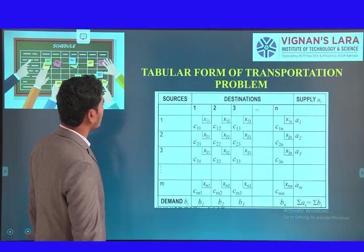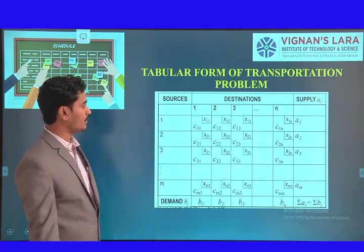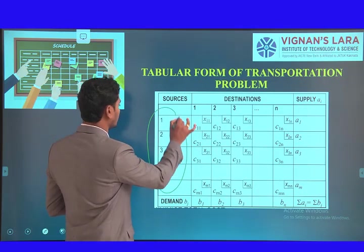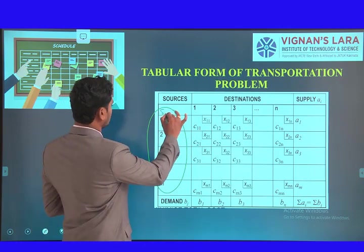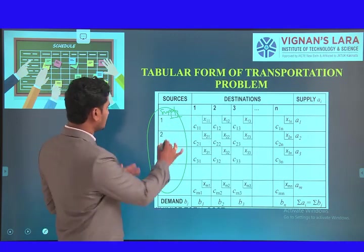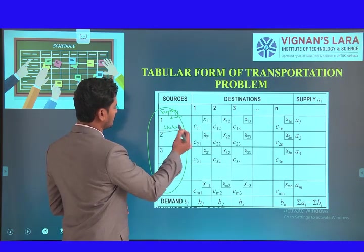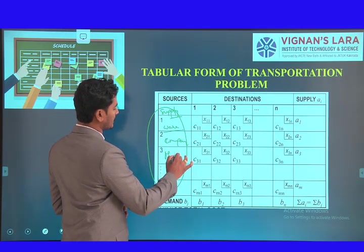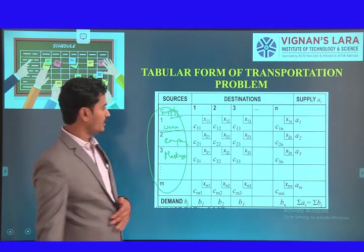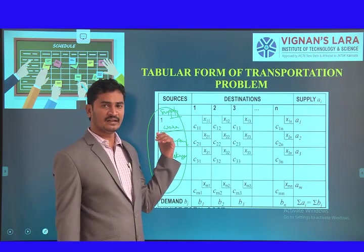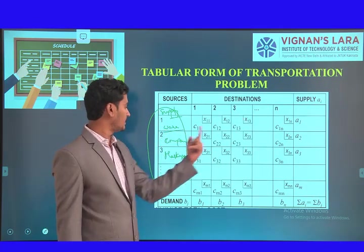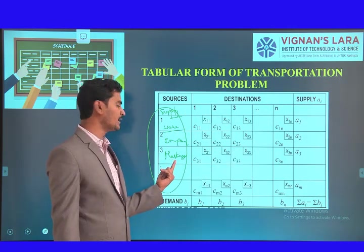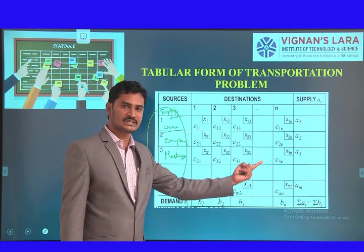Coming to the table form of the transportation problem: in the first column we have the sources — these are also called warehouses, company outlets, or markets. If the source is a warehouse, we send from warehouse to market. If it is a company, we send from company to market. If the market is the source, we send product to the customer. Here the destinations are demand stations, which are various routes and demand centers.